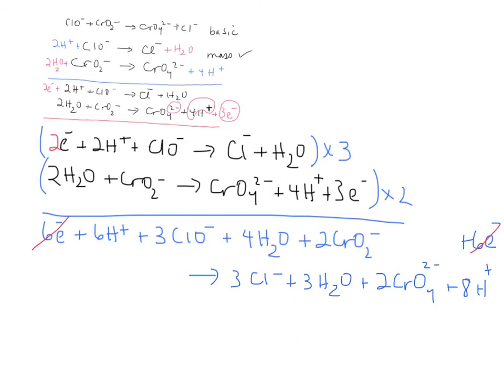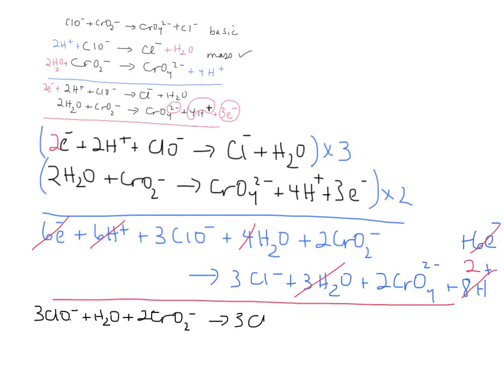The six electrons cancel, six hydrogens are going to cancel with six of the eight hydrogens, so there's going to be two left over, and then three waters are going to cancel with three waters here, so you've got one left over. And then you can rewrite this as 3ClO⁻, plus water, plus 2CrO₂⁻, forms 3Cl⁻, plus 2CrO₄²⁻, plus 2H⁺. Okay, let me check my notes here, see if that looks right, yep, looks good.